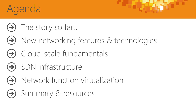We'll look at SDN infrastructure — network virtualization and some other key components, including new network function virtualization capabilities. Think of this as taking things around the network that you would typically have as hardware appliances, like a load balancer, a firewall, or a site-to-site VPN gateway, and virtualizing those. Those are virtualized network functions. We'll talk about the ones that ship in the box for Windows Server 2016 and how we integrate with third parties, then wrap up with resources.